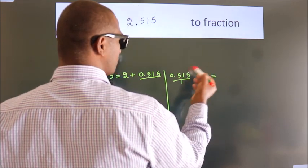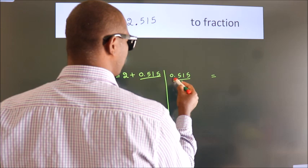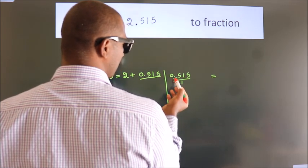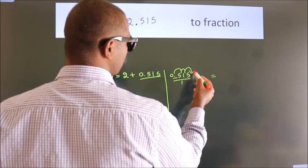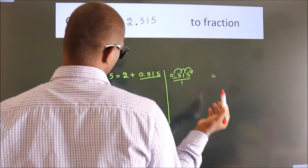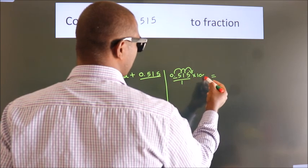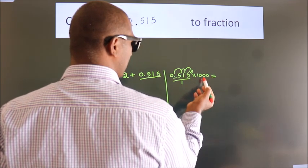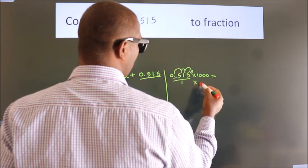To convert this to fraction, we have to move this decimal after 3 numbers. To move this decimal after 3 numbers, we have to multiply it with 1000. Whatever number you are multiplying in the numerator, in the denominator also do the same.